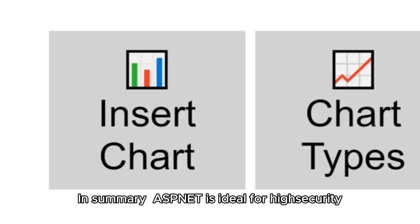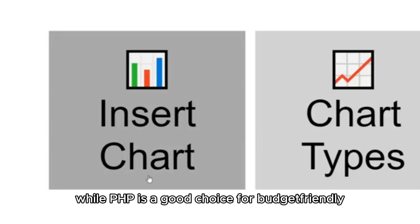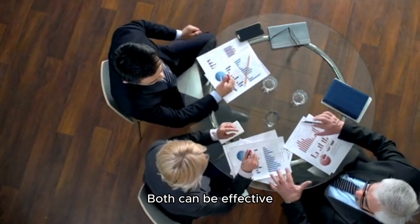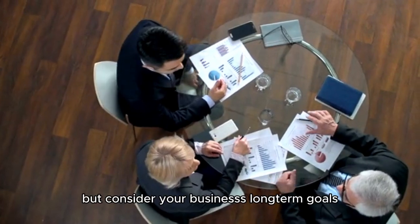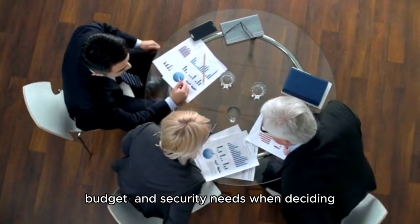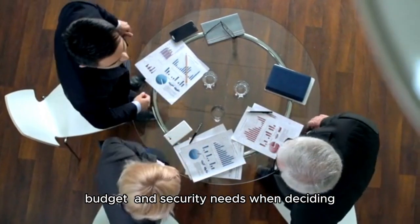In summary, ASP.NET is ideal for high-security, large-scale MLM websites, while PHP is a good choice for budget-friendly, fast development projects. Both can be effective, but consider your business's long-term goals, budget, and security needs when deciding.